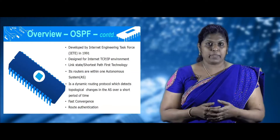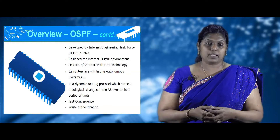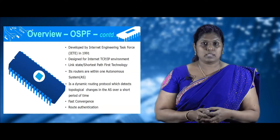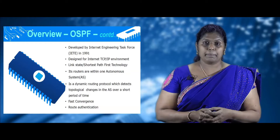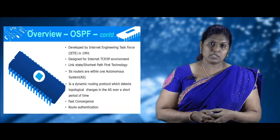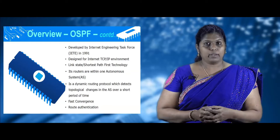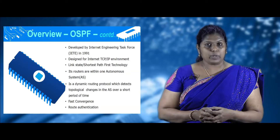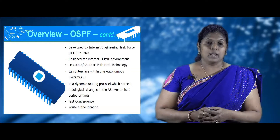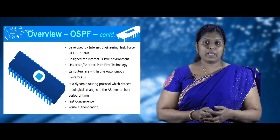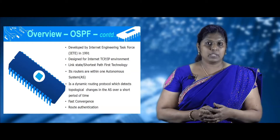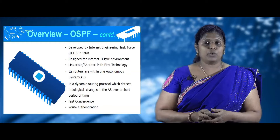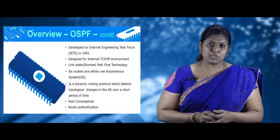OSPF was developed in the year 1991 by the IETF — the Internet Engineering Task Force. It is purely developed for the TCP/IP environment and uses the link state routing protocol, which in turn uses the shortest path first technology. All routers work within one autonomous system. This routing protocol is a dynamic routing protocol which detects topological changes within the autonomous system, and it also has a feature of fast convergence with route authentication.